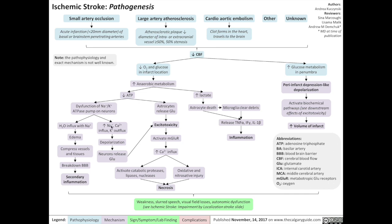Dysfunction of sodium potassium pumps on neurons can also result in increased sodium and calcium influx into the neuron, as well as potassium outflux. That will result in depolarization of the neuron and the neurons releasing glutamate, a neurotransmitter. Reduced ATP can also directly cause astrocytes in the brain to release glutamate, a neurotransmitter. And so the increased amount of glutamate in the brain contributes to an overall level of excitotoxicity for the brain. This results in increased calcium influx into neurons, which activates catabolic proteases, lipases, and nucleases, as well as contributes to oxidative and nitrosative injury, leading to necrosis of brain tissue.